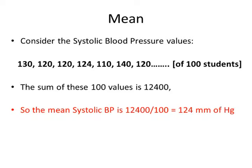We take the individual values of each of the 100 students and add them up together — this forms the numerator. The denominator is the total number of students, which in this case would be 100. So the total of the individual blood pressure values divided by the total number of students gives us the average blood pressure for those 100 students.